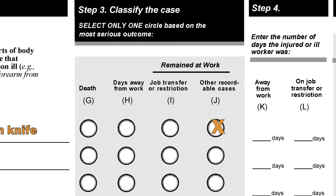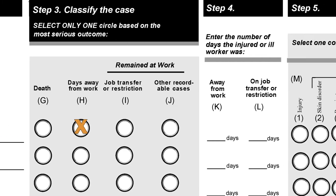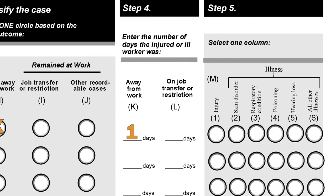Classify the case by selecting only one category. If the case gets more serious, like going from a minor injury to involving days away from work, this category must be updated. Enter the days away from work, or days of job transfer or restriction. This may need to be updated as the case evolves. Finally, select one injury or illness category.